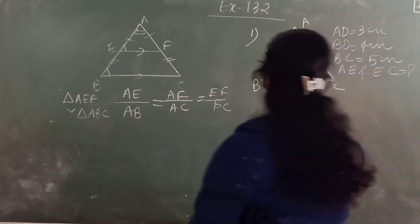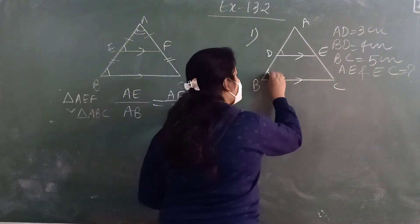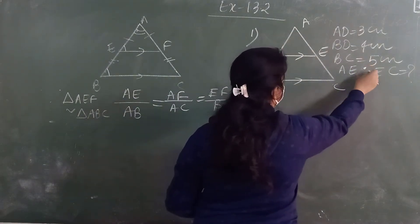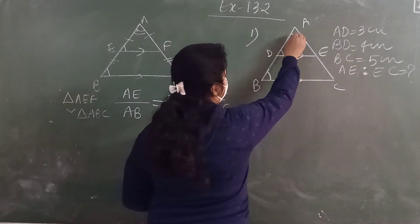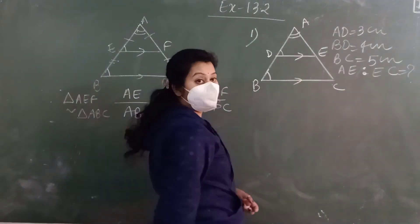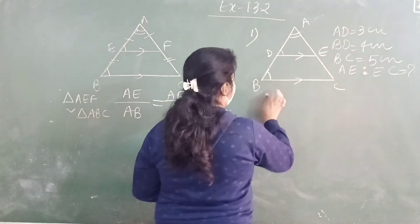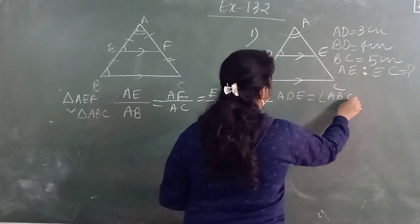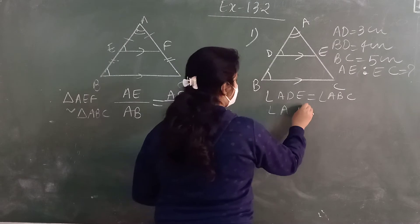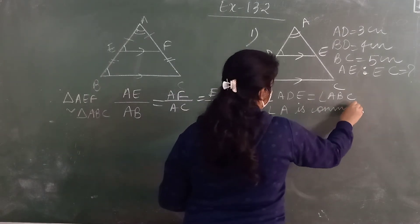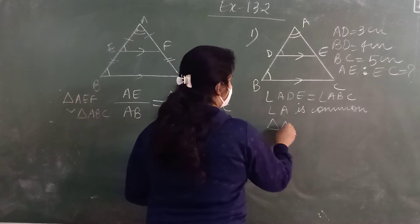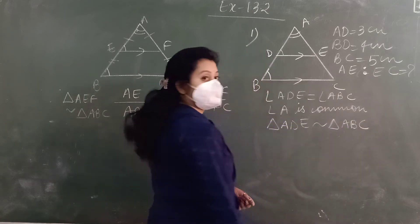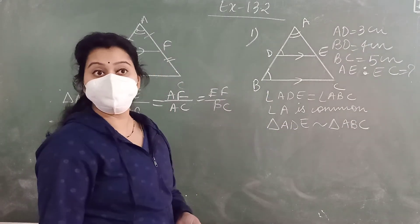Because the alternate angles are equal. DE parallel BC. And we have this common angle. So these two triangles are similar. So angle ADE equal angle ABC. And angle A is common. So you can write triangle ADE similar triangle ABC. By AA.